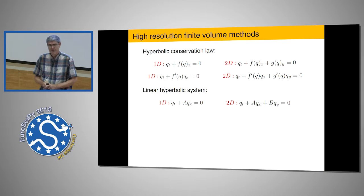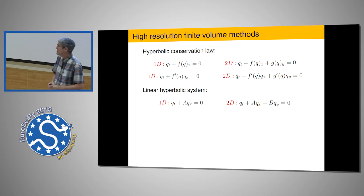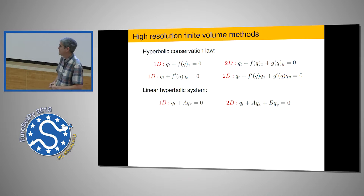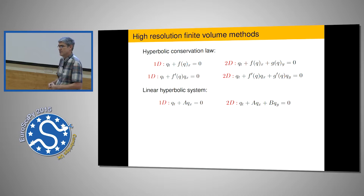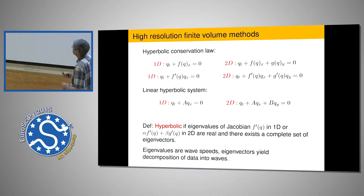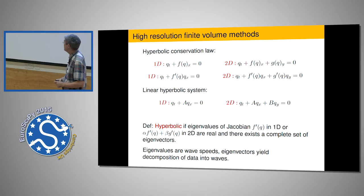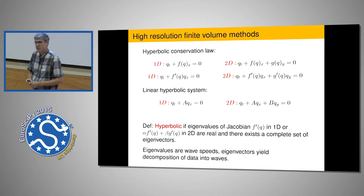In one space dimension, a basic hyperbolic conservation law says that the time derivative of some conserved quantity—mass, momentum, or energy—plus the x-derivative of some flux function equals zero, which is basically a statement of conservation of mass. In 2D, it's the divergence of a flux vector F and G. In the simplest linear case that reduces to Qt plus AQx equals zero, where A is a matrix. What makes this hyperbolic is if the coefficient matrix A, or the Jacobian in the nonlinear case, can be diagonalized with real eigenvalues. The eigenvalues give the wave speeds and the eigenvectors describe the propagating waves.